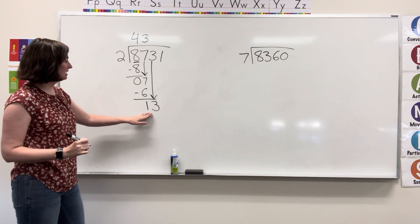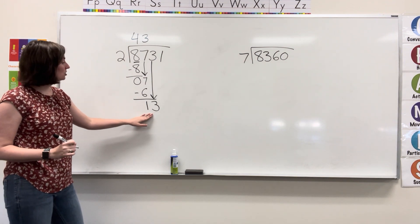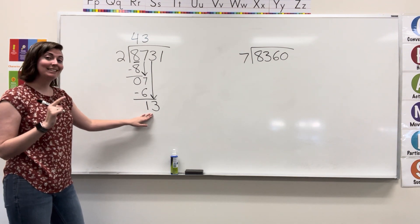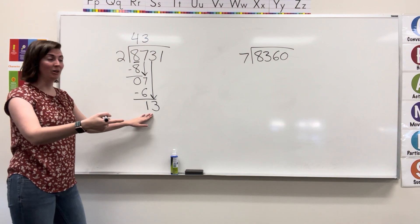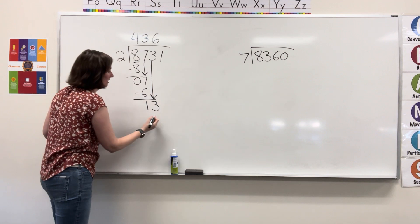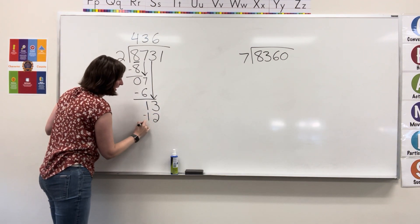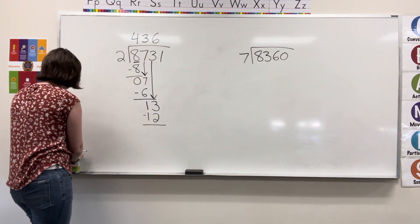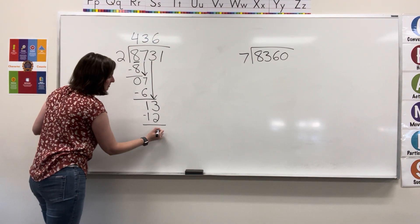Now I'm looking at two fitting into thirteen. Two fits into thirteen six times without going over. So I'm going to write that six. Six times two is twelve and I subtract. Thirteen minus twelve gets me one.